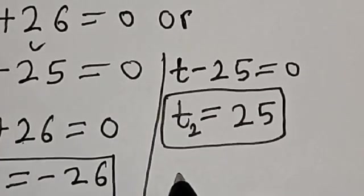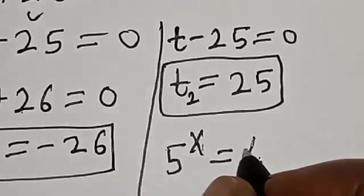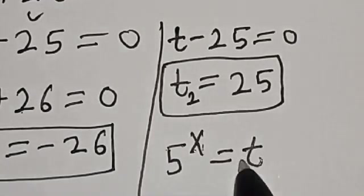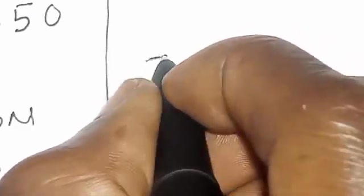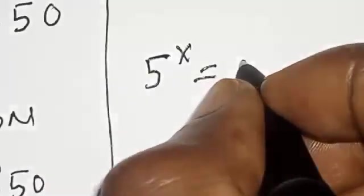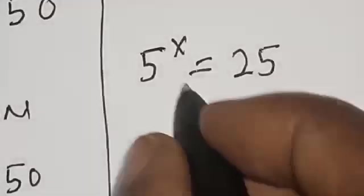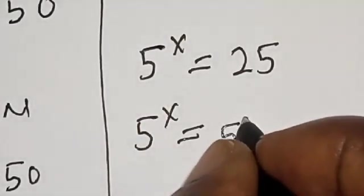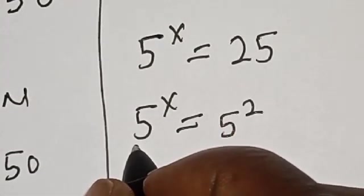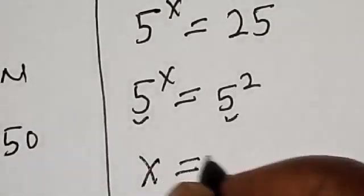Since 5 raised to the power s equals t, and t1 is minus 26 and t2 is 25: for the second case, 5 raised to the power s is equal to 25. Now, 25 is 5 squared, so 5 raised to the power s equals 5 squared. With the same base of 5 on both sides, s is equal to 2.